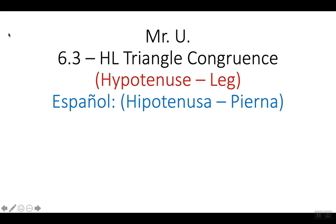Chapter 6.3, HL Triangle Congruence. The HL stands for Hypotenuse Leg Triangle Congruence. Capítulo 6.3, HL Congruencia de Triángulos. La HL significa la hipotenusa y una pierna de un triángulo de 90 grados.